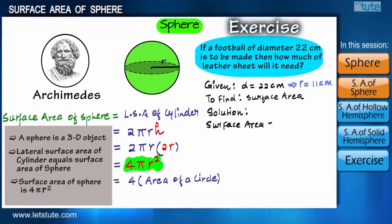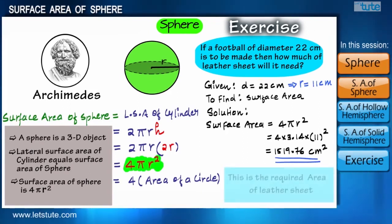So let's put the value of radius into the formula and we will get 1519.76 centimeters squared. That means it will need 1519.76 centimeters squared of leather sheet. So guys, this is how we make use of the formula in different scenarios.